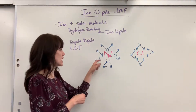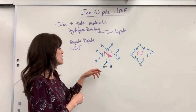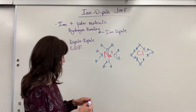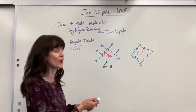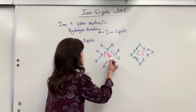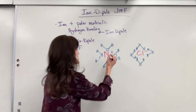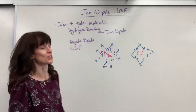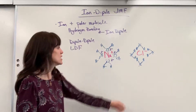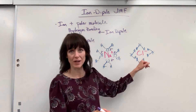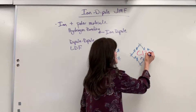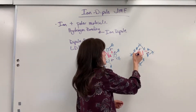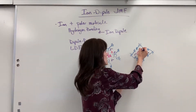Water will always surround an ion, positive or negative. Notice that the cation is positive — all of the partial negatives of the oxygen go close to that sodium. You could write that partial negative on all four of these water molecules. That partial negative is attracted to the sodium ion, that positive. The hydrogen in water is a partial positive, so the partial positive of the hydrogen is attracted to the negative of the chlorine.